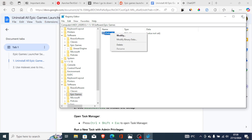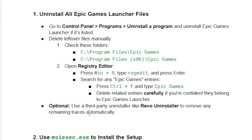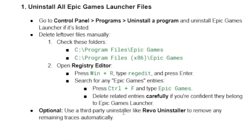You can right-click on any remaining entries and delete them. Optionally, you can use a third-party uninstaller like Revo Uninstaller to remove any remaining traces automatically, instead of following all these manual steps.